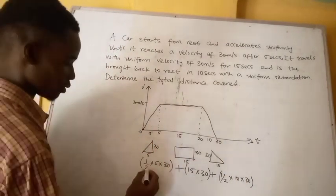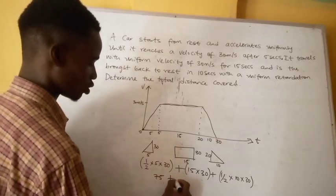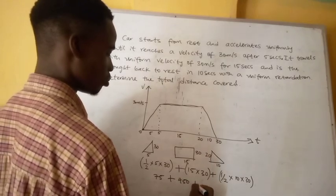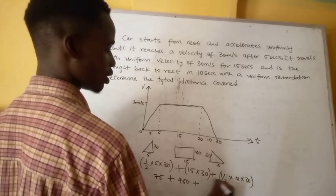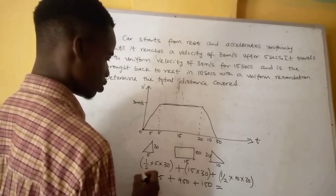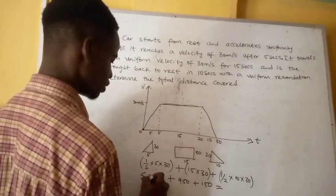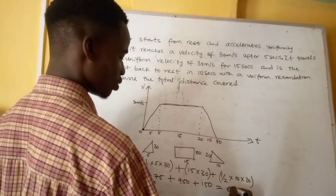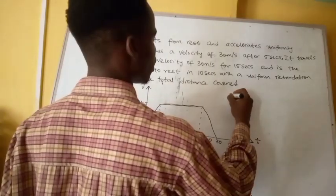Solving: area of first triangle = ½ × 5 × 30 = 75. Area of rectangle = 15 × 30 = 450. Area of second triangle = ½ × 10 × 30 = 150. Summing all together: total distance = 75 + 450 + 150 = 675 meters.